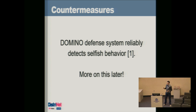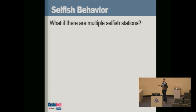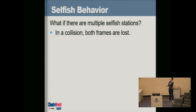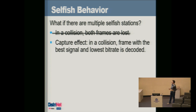What happens if there are two selfish attackers trying to transmit at the same time? A common assumption is that there is a collision and both frames are lost. It turns out this is not the case. If there is a collision, generally the device which has the best signal quality and is using the lowest bit rate will have its packets decoded correctly. This is called the capture effect.